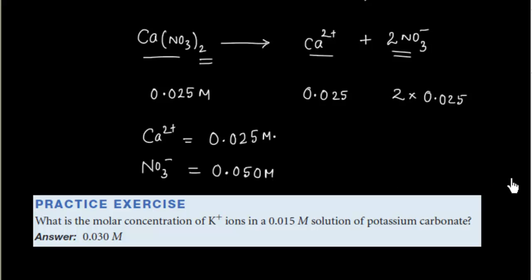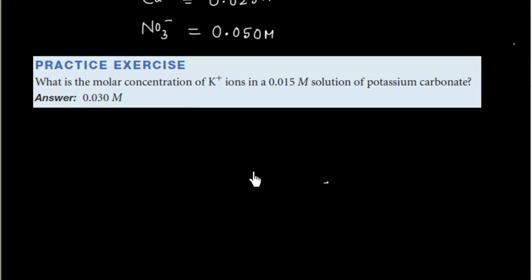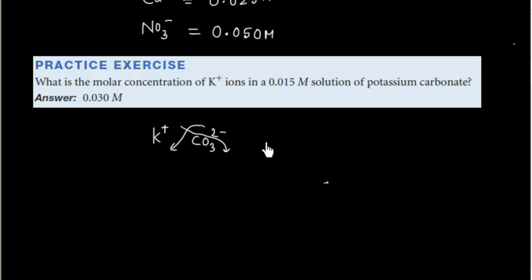Now for a practice exercise: what is the molar concentration of K⁺ ions in a 0.015 M solution of potassium carbonate? First, we write the formula of potassium carbonate. K⁺ and CO₃²⁻ combine to give the formula K₂CO₃, and the concentration is given as 0.015 M.